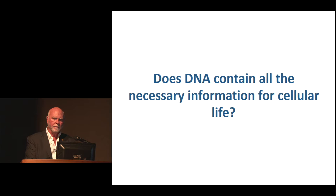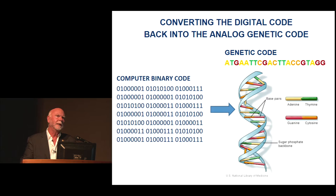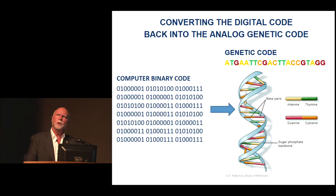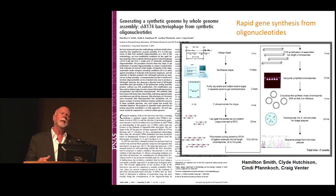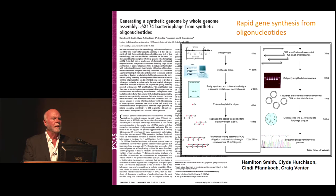We decided the only way to find that minimal gene set was to try and synthesize life from scratch from the genetic code — to start with ones and zeros in the computer and four bottles of chemicals and recreate the genetic code. We started with a simple virus, the first DNA virus sequenced by Sanger and colleagues, Phi X 174 — a little over 5,000 letters of the genetic code. DNA synthesizers are error-prone; the longer the piece of DNA, the more errors.